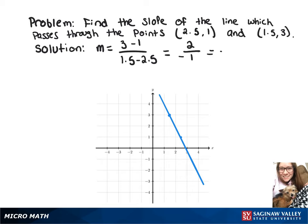So if you go to a point on the line, you'll either go up 2 and to the left 1, or down 2 and to the right 1, and that'll get you to another point on the line.